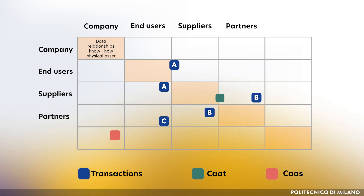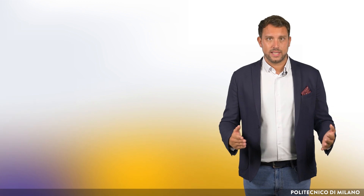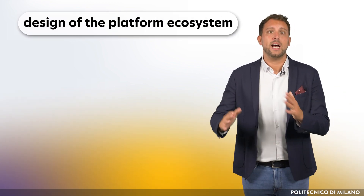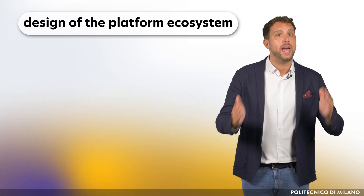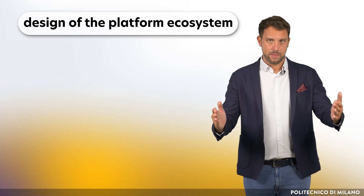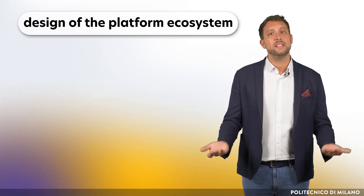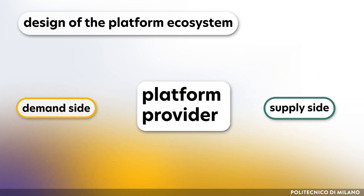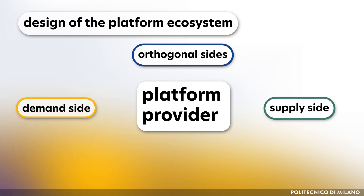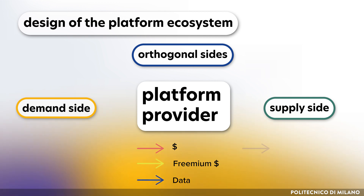The second step is the design of the platform ecosystem — in other words, identifying which actors we want to include in the platform and with which role. The first step involves the clear identification of the actors, divided between supply-side, demand-side, and orthogonal sides, and the types of exchanges they can have within the platform: money by default or in freemium mode, data, services, and data-driven value-added services.